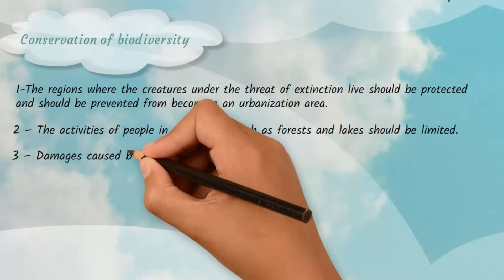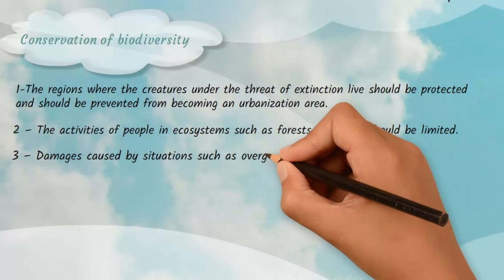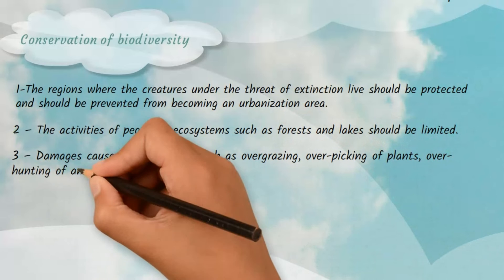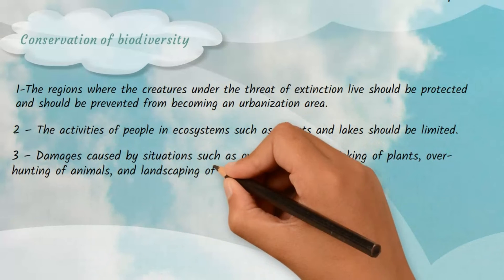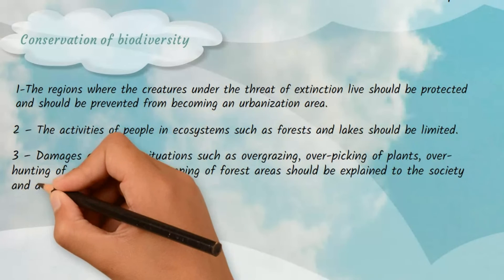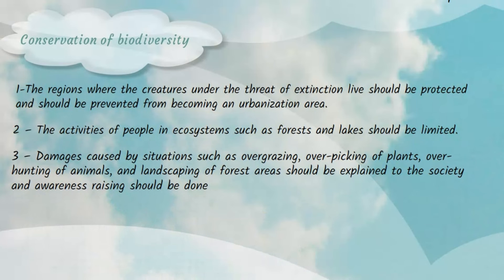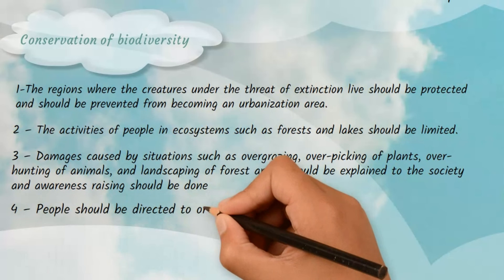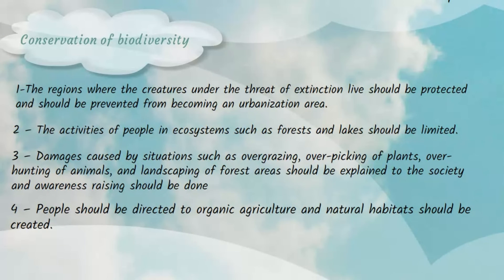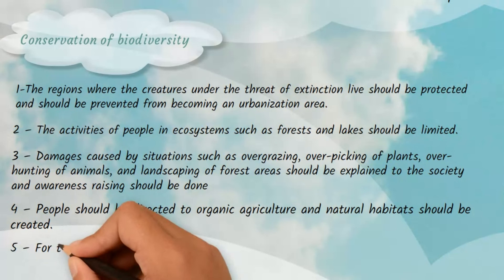3. Damages caused by situations such as overgrazing, overpicking of plants, overhunting of animals, and landscaping of forest areas should be explained to society and awareness raising should be done. 4. People should be directed to organic agriculture and natural habitats should be created.